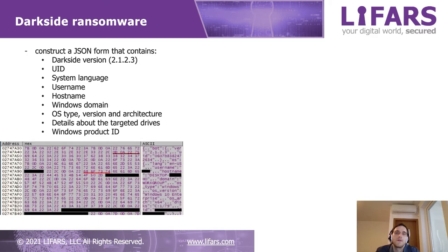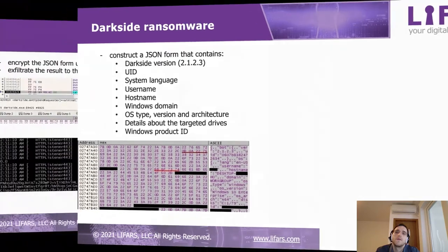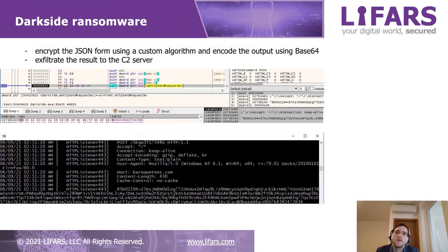The malware will construct a JSON form containing the following information: the DarkSide version, UID, system language, username, hostname, and so on. This JSON form will be encrypted using a custom algorithm, then encoded using Base64, and the result will be exfiltrated to the C2 server, as we can see in the second picture.